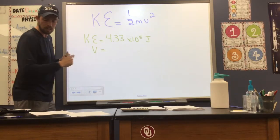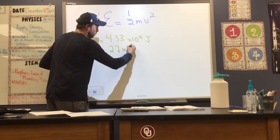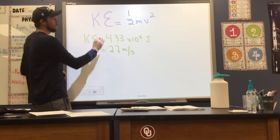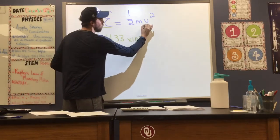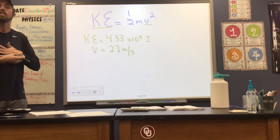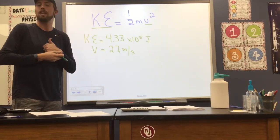Now the velocity we're given is 27 meters per second. So here you'll notice we're given our kinetic energy and we're given velocity. All we're going to do is plug those values into our equation and solve for the mass.